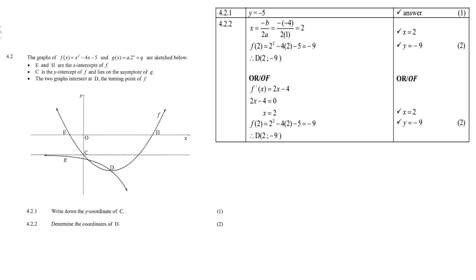For 4.2.1, write down the coordinates of C. C is the y-intercept of the parabola, found directly from x² − 4x − 5: the y-intercept is −5. For 4.2.2, the coordinates of D: differentiate x² − 4x − 5 to get 2x − 4, set it to 0 at the turning point, giving x = 2. Substitute x = 2 into the original formula to get y = −9, so D = (2, −9).